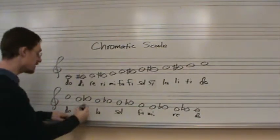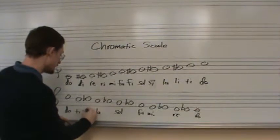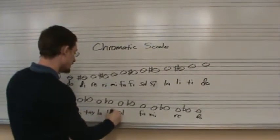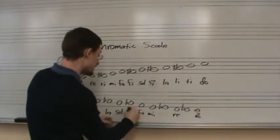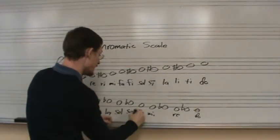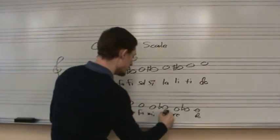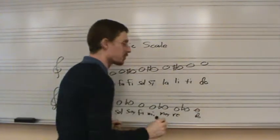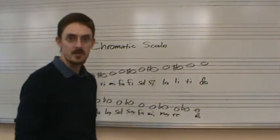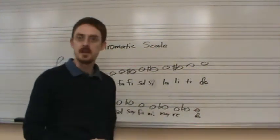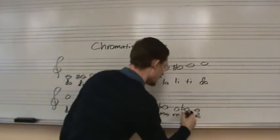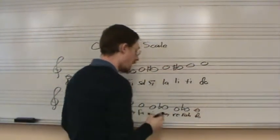So here's DO. TI will become TE, LA becomes LE, SOL becomes SE, FA is a half step, MI becomes ME. And here is where we run into a problem. RE already has that sound represented, in this case, by an E. So this is the one exception to the rule. RE becomes RA.